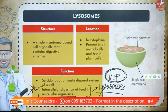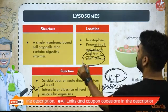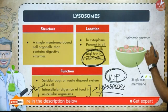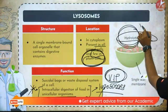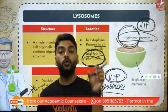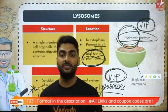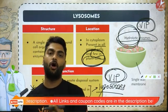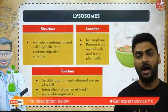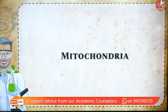Lysosomes are single-membrane cell organelles that contain digestive enzymes. They are present in all animal cells but in very few plant cells. They have hydrolytic enzymes. In higher grades you will learn how hydrolytic enzymes destroy foreign objects in the lysosome — how lysosomes help to destroy any foreign body that enters the cell.